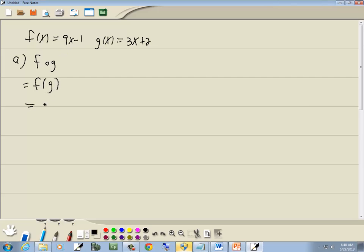So we're going to take our f of x, and everywhere we have an x, we'll put it in parentheses. So we've got 9 times parentheses minus 1.